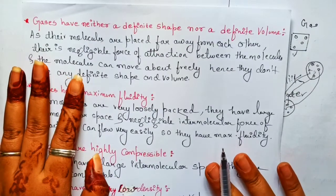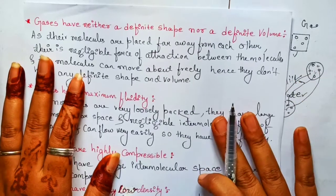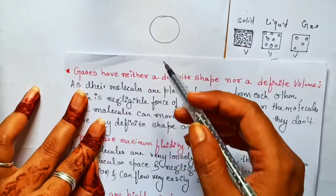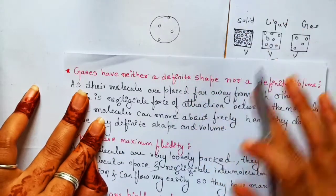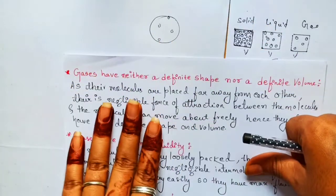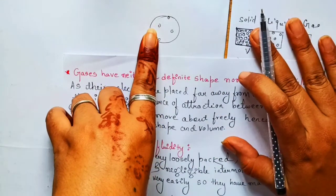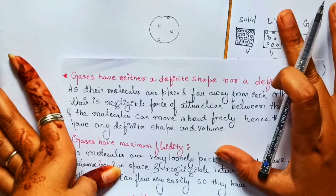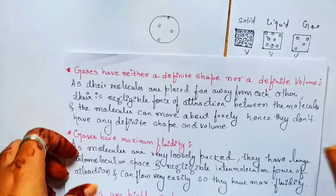Let's discuss the properties one by one with reasons. The first point: gases have no definite shape nor volume. The reason is that molecules in gas are very loosely packed — they are very far away from each other. The force of attraction between them is negligible, so the molecules are free to move anywhere. That's why gases don't have any definite shape or definite volume.